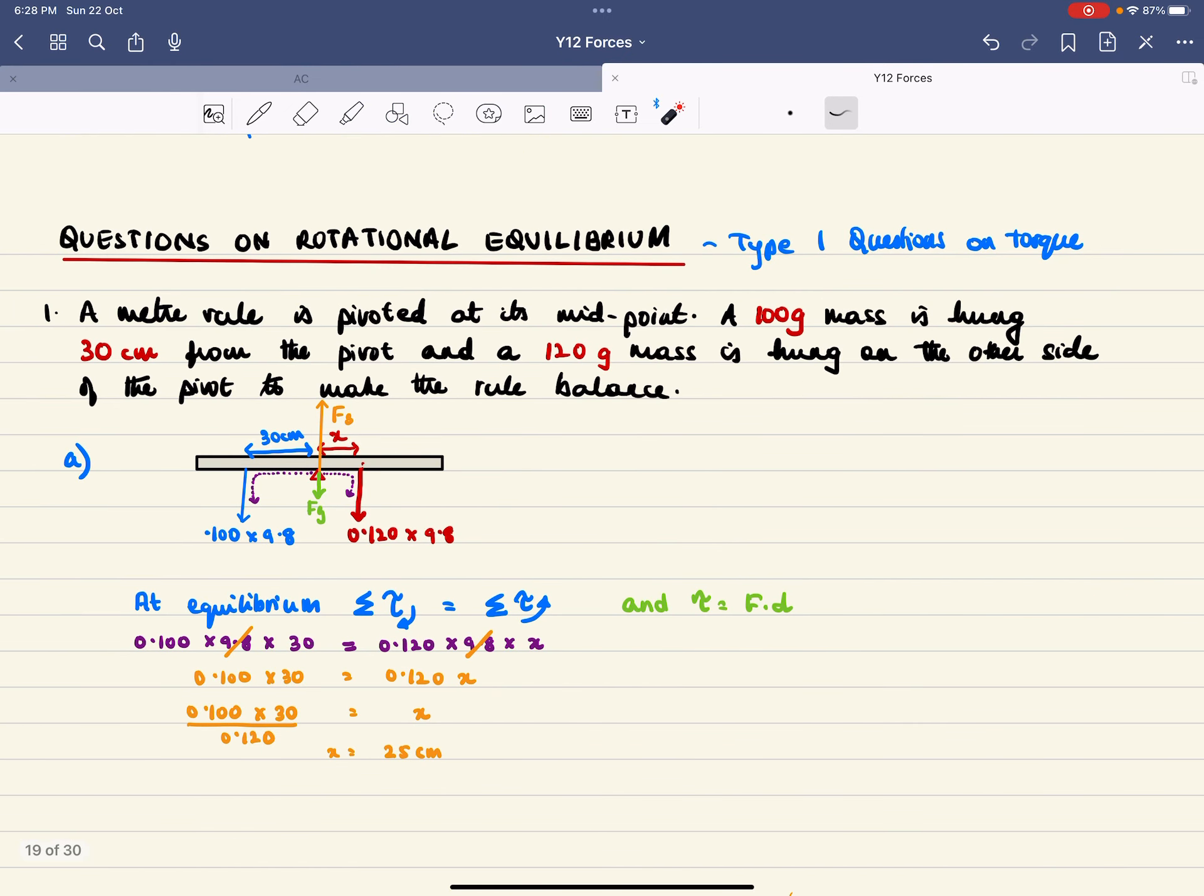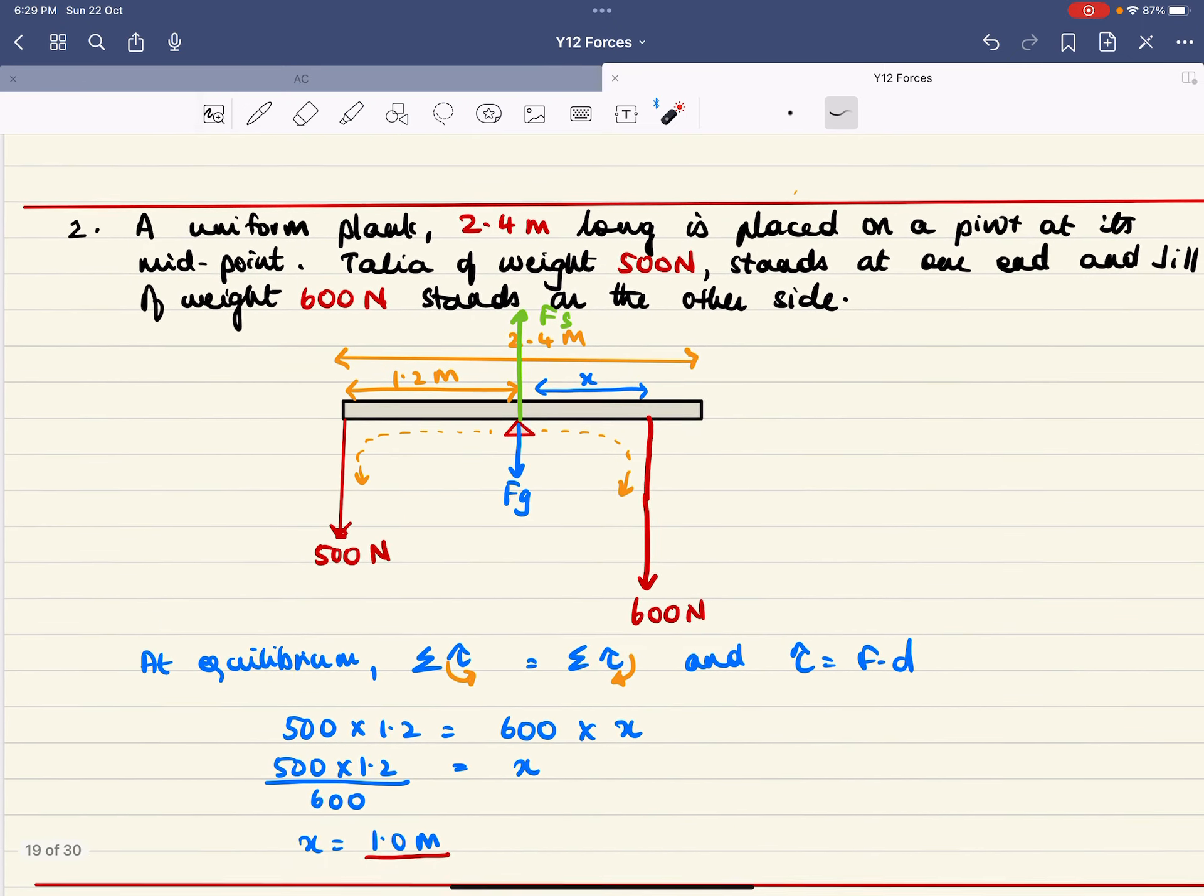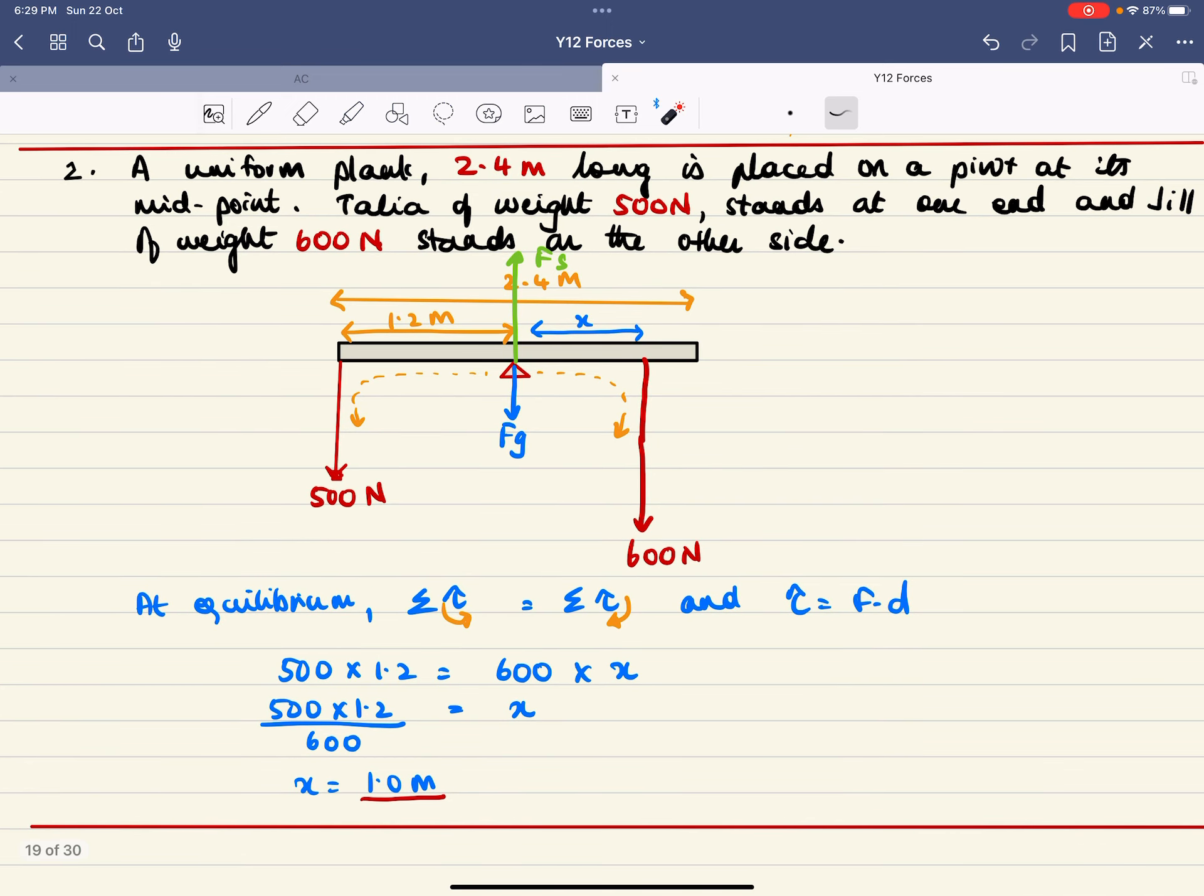Now, questions on rotational equilibrium. There are two types: Type 1 is when there's only one pivot. To determine clockwise and anti-clockwise torques, start from the pivot, go along the beam, and come down in the direction of the arrow. This gives you anti-clockwise on one side and clockwise on the other. You can look through my working for this example, and there's another question here showing how it's done.